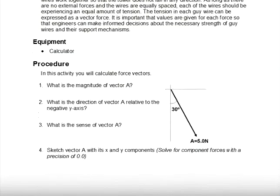First question, pretty simple. What's the magnitude of vector A? Well, that's right here. A equals 5 newtons. So, we just simply write 5 newtons.